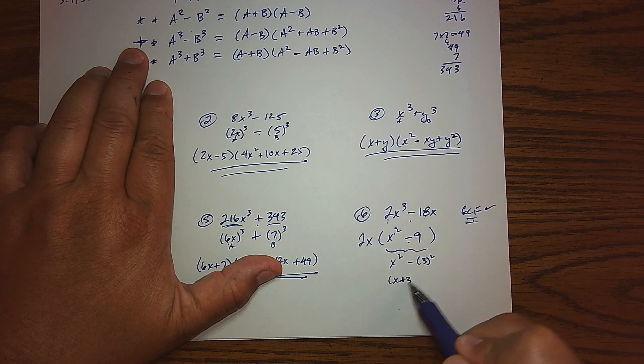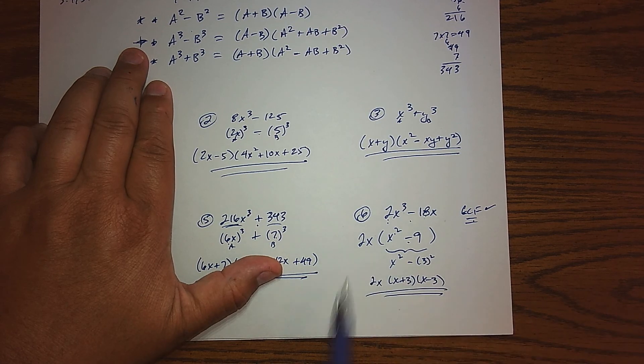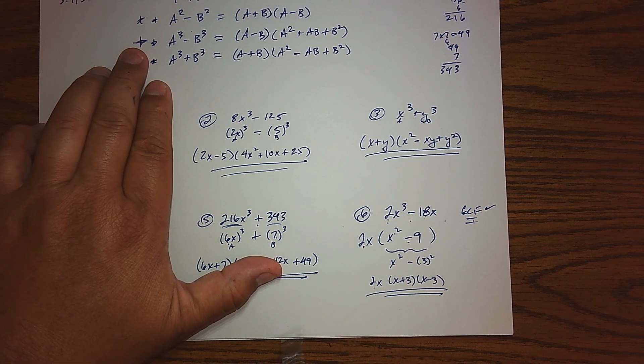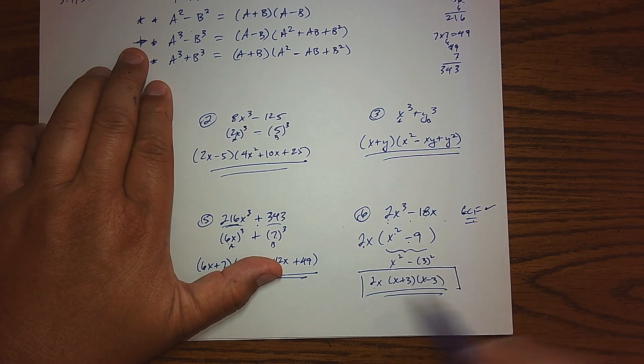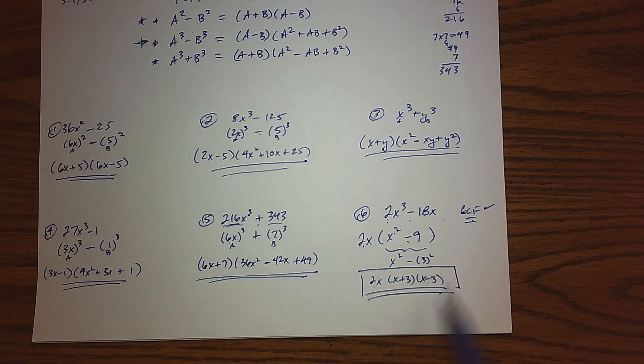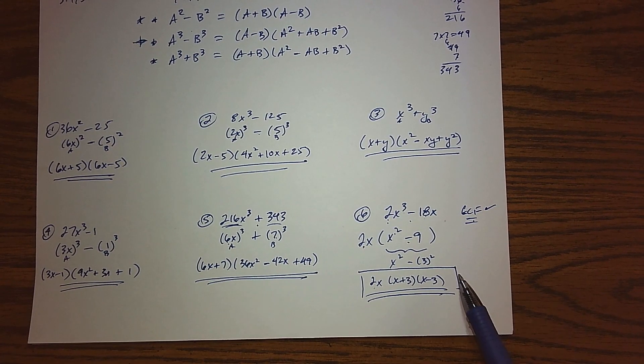So that's (x + 3)(x - 3). And so what's the full factorization? Well, it's that thing—it's the GCF we pulled out—multiply it to the (x + 3)(x - 3). And that should give you a glimpse of what's coming. We're basically fully factoring a polynomial. We've got everything we need to factor polynomials.